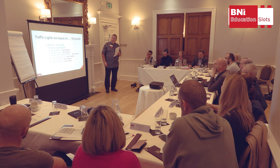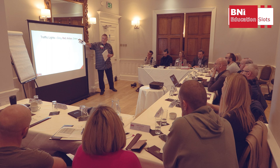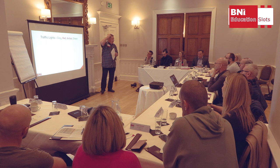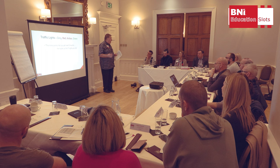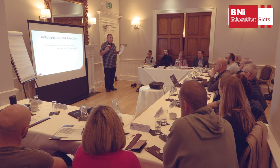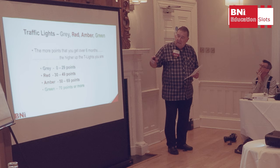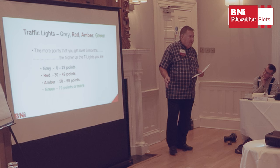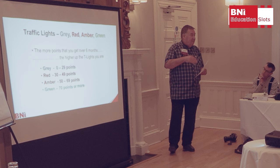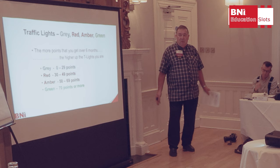Traffic lights are measured in three — or rather four — colours: green, amber, red, and grey, which was added about six years ago because not everybody drops straight into red. All traffic lights are measured over a 26-week period — the last six months. 1 to 30 points is grey, 30 to 50 is red, 50 to 69 is amber, and 70 points or above is green. The idea is if we can get everybody in the green, we'll be a super-duper well-performing chapter.